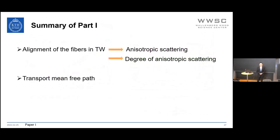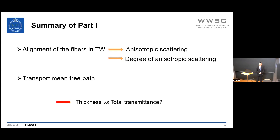To summarize Part 1: the anisotropic scattering of transparent wood is caused by fiber alignment, and the degree of anisotropic scattering (DAS) is proposed to describe this anisotropy. The transport mean free path is a useful optical parameter for transparent wood, and sample thickness influences the scattering ability. This leads to Part 2: how does thickness influence the total transmittance, meaning the number of transmitted photons?